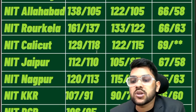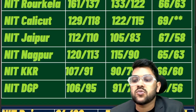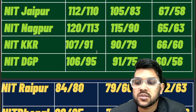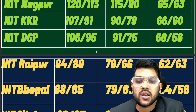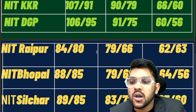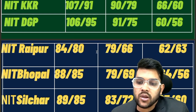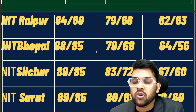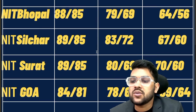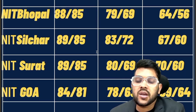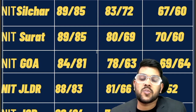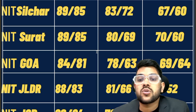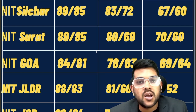For Kurukshetra: 107, 90, 66. For Durgapur: 106, 91, 60. For Raipur: 84, 79, 62. For Gopa (NIT Goa): 88, 79, 64. For Silchar: 89, 83, 67. For Surat: 89, 80, 70. For Goa: 84, 78, 69. For Jalandhar: 88, 81, 56. These are the marks you need to score in the first attempt of the JEE examination.